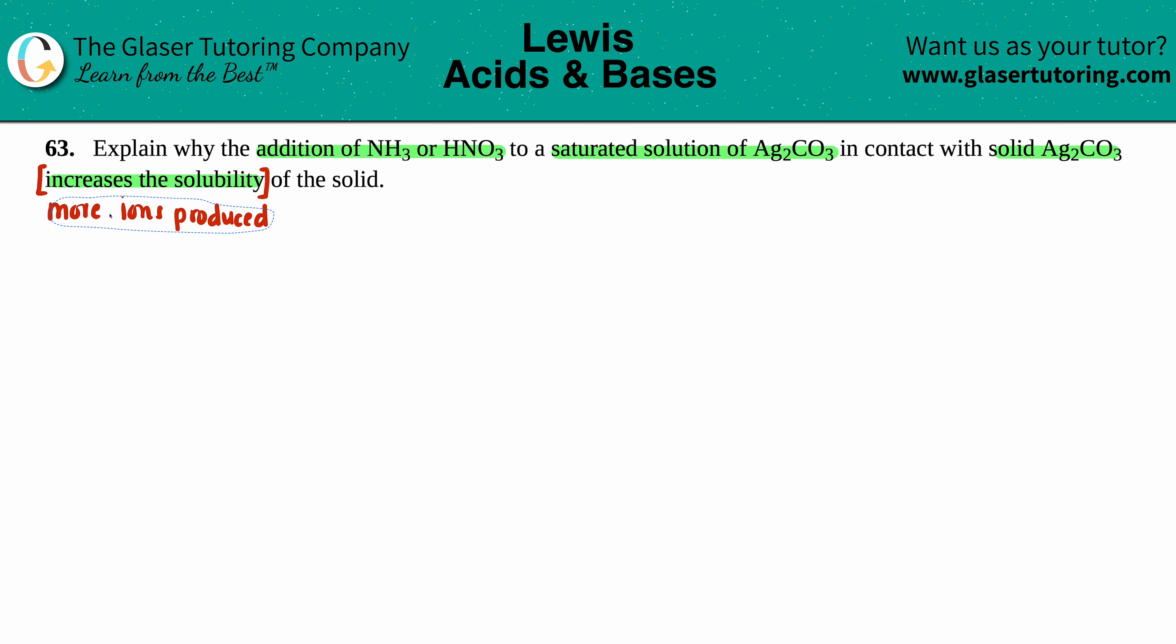So basically we just want to figure out why when we add NH3 and HNO3, why do we actually produce more ions in solution? Well, the first thing we have to write out is let's just see what the ions are produced in this saturated solution. If you're saturated, this goes back to saying that you have a KSP. Now for this question, we don't really need to know what the KSP is of Ag2CO3. We just need to know what the ions are.